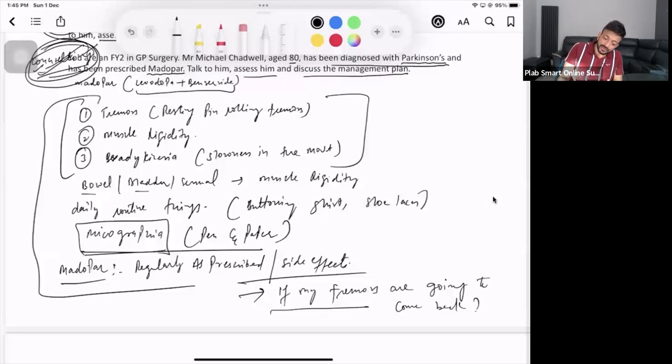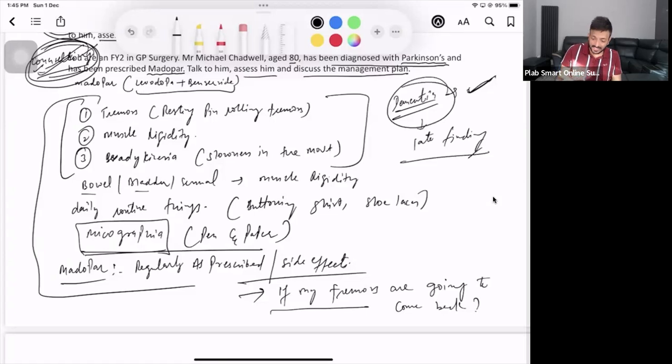One thing. In a patient of Parkinson's, do we have dementia or not? The thing is dementia can be there, but it is gonna be the late finding. In Parkinson's, you will not see dementia as a very early sign. It is gonna be there as a late finding. You don't need to, but you can ask one question. That's not a problem, but it's a late finding.